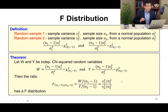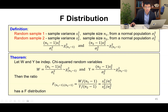Now for the definition using two random samples: we have sample variance S1-squared with sample size N1 from a normal population with variance sigma1-squared. We know that (N1 - 1)S1-squared / sigma1-squared is chi-squared distributed with N1 - 1 degrees of freedom.